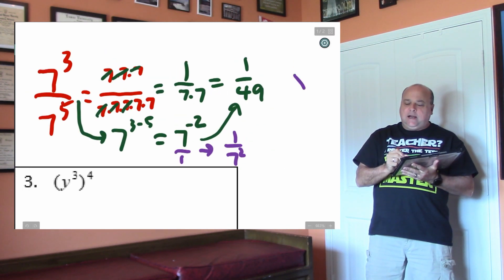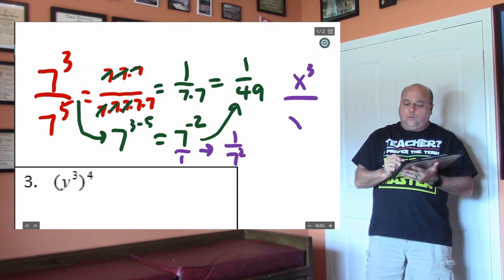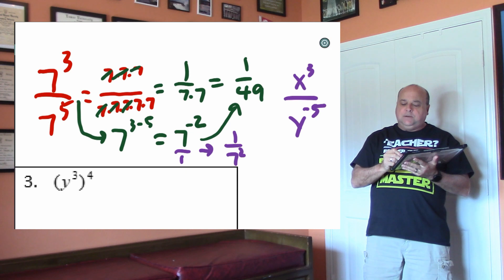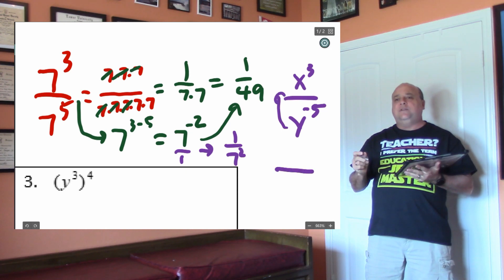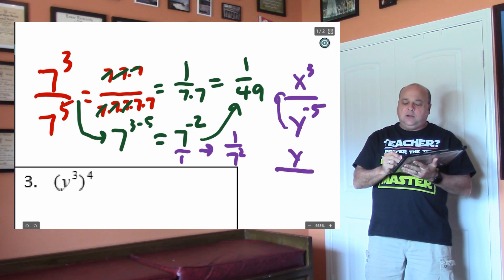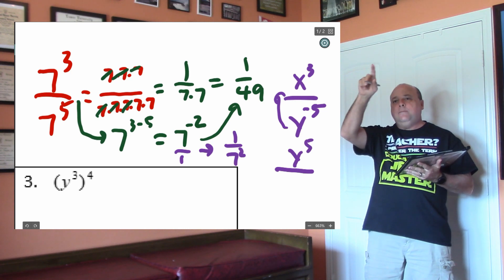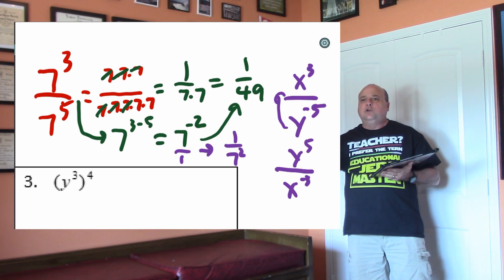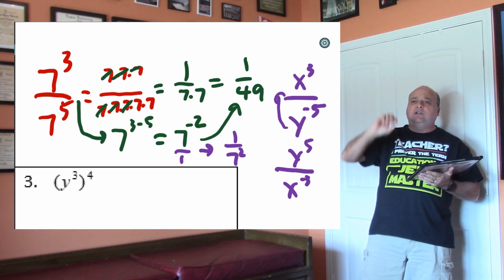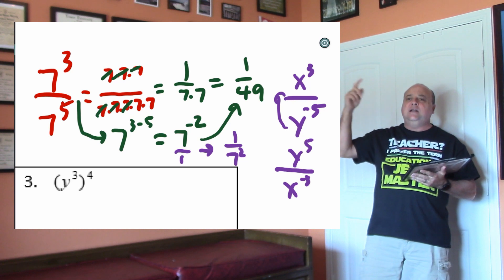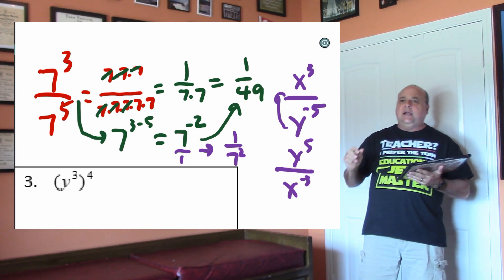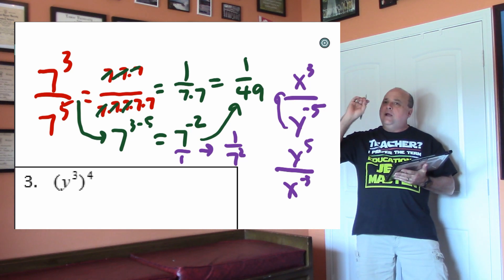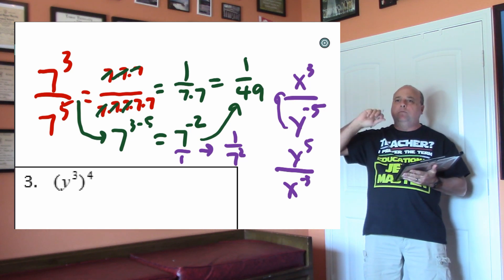For instance, write down x to the 3rd over y to the negative 5. Now let's flip the fraction. If I were to move the y to the top, the negative exponent would turn positive. But when I move the x to the bottom, the positive exponent would turn negative. Whenever you move a base across the fraction bar, the sign of the exponent flips. That's where the negative exponent comes from — it's telling you that base is in the wrong part of the fraction.